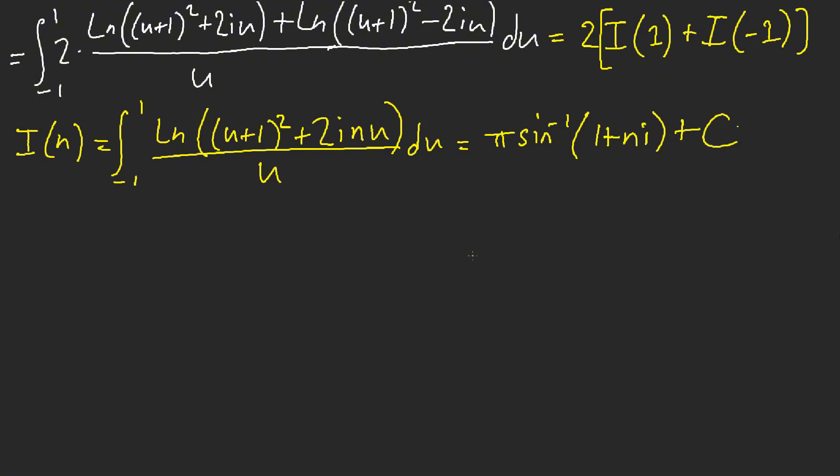All right, cool. We found i of n. Now what? Well, now we have to find the constant. So let's go ahead and find our constant first. So we know this is pi inverse sine of like 1 plus ni plus c. However, we need to find c. If n is equal to 0, i of 0, this is going to be 2 ln of u plus 1 squared. Oh, not squared. Just that. But if you use Taylor series, we know this. It's a famous integral. With Taylor series, this is just going to equal to pi squared over 2. Plug this in with 0. That's also pi squared over 2. So it seems like c is equal to 0. Awesome.